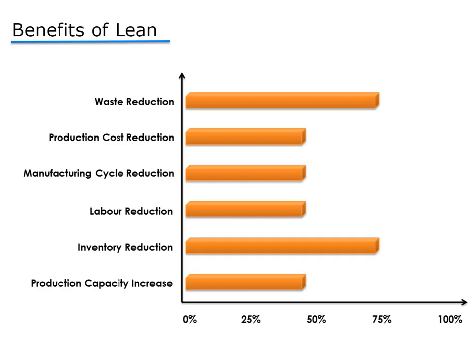Understanding lean will help you to improve your operations by reducing the wastes in the process and improving your activities to maximize production capacity. The graph shows the typical benefits you get by applying lean to your processes.